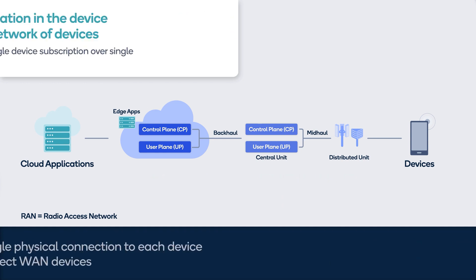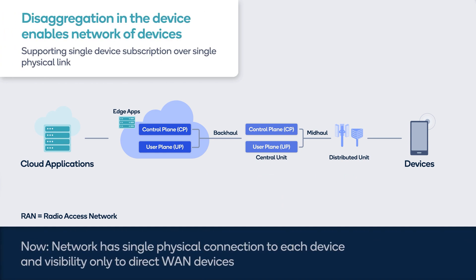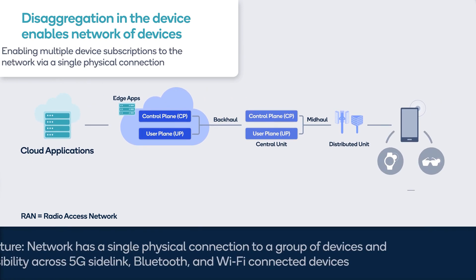Today, only devices directly connected to the network are visible to it, with a single device subscription over a single physical link. The concept of device disaggregation is to split the protocol stack layers across devices so that multiple device subscriptions can be supported via a single physical connection. The group of tethered devices are visible to the network while connected via both 3GPP and non-3GPP interfaces to the relay.